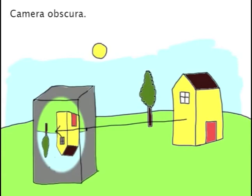You'll notice that the projection is always upside down and backwards. This is because light travels in a straight line.